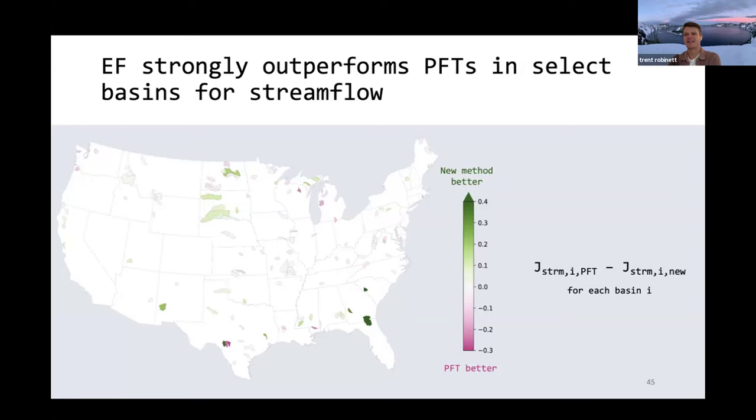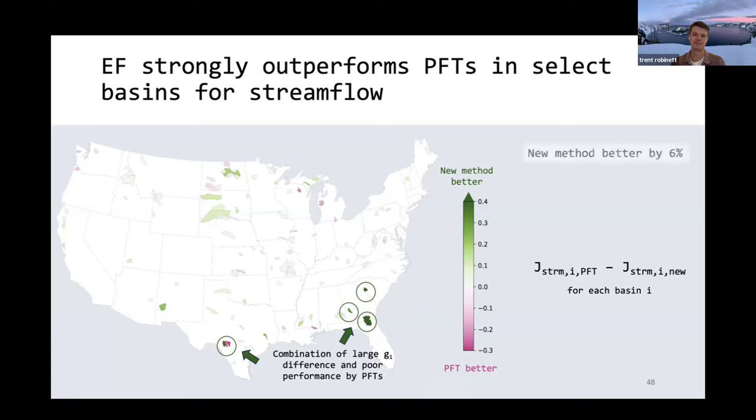What really stands out to me about this method is that there's really a couple of basins where we have really dark green. Notably, there's a cluster of five basins that I circled down here in the bottom right hand corner, southeastern US, and then another one in Texas. What we find is these basins where there is a large difference between our methods come from a combination of the fact there's just a large g1 difference between my new method and the PFT based method in these basins. But also these are places where PFTs were doing really poorly in the default based model.